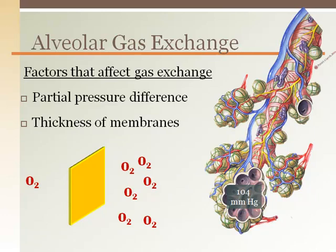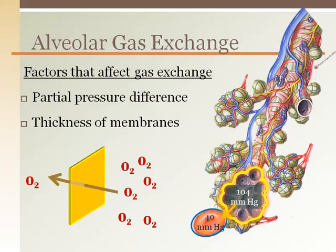The thickness of the alveolar membrane affects the ability of the oxygen molecules to cross to the red blood cells. The alveolar membrane is made of simple squamous epithelial tissue, the thinnest it can be. With conditions like pneumonia, the alveolar membrane can thicken, making it more difficult for oxygen to effectively cross over to the blood.